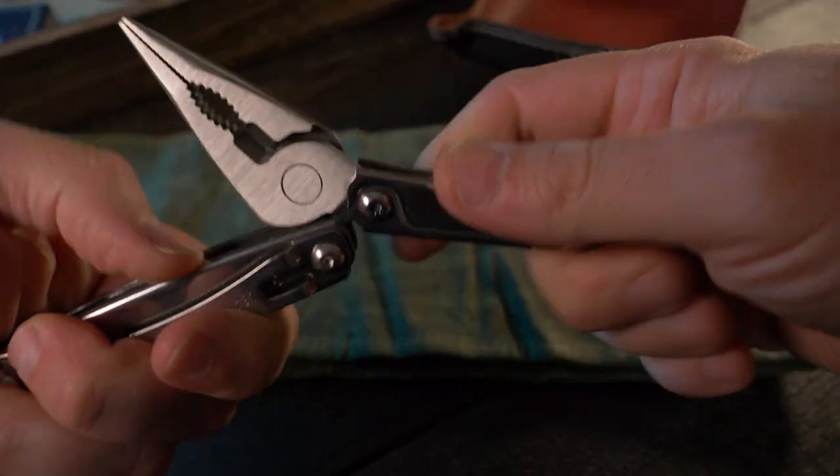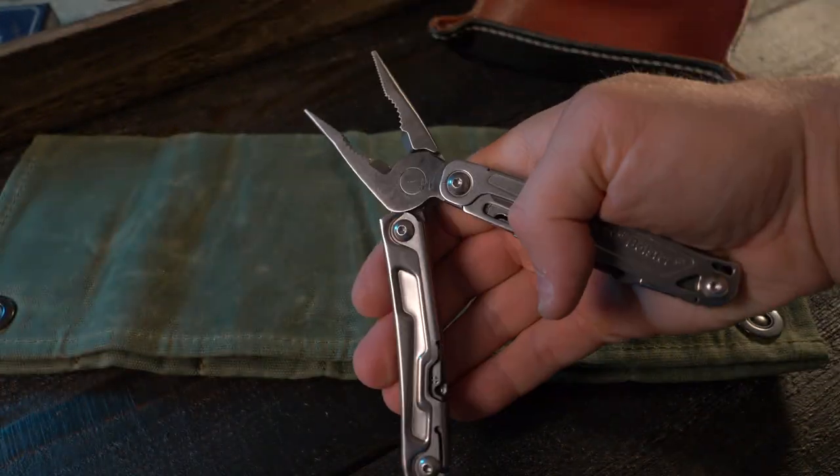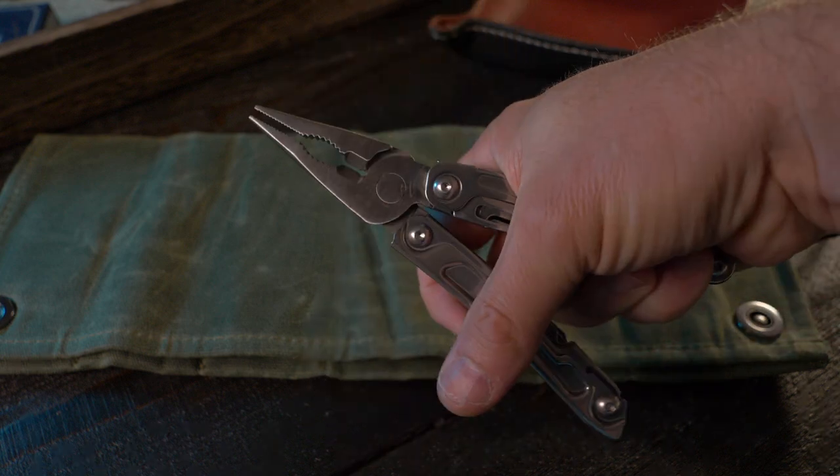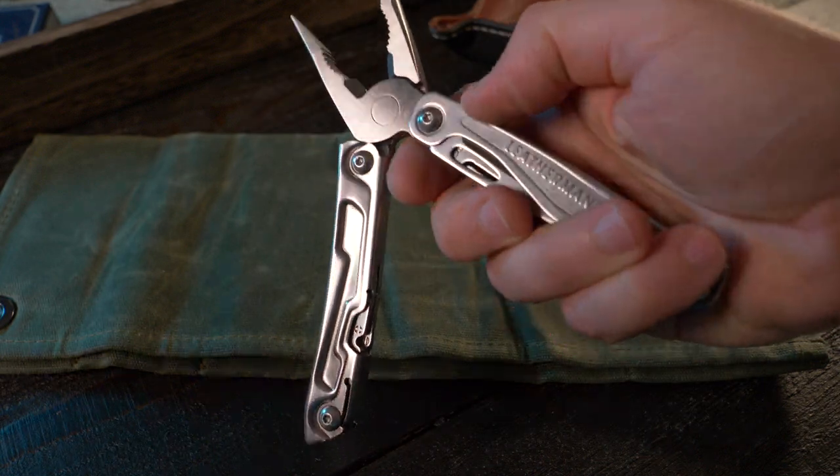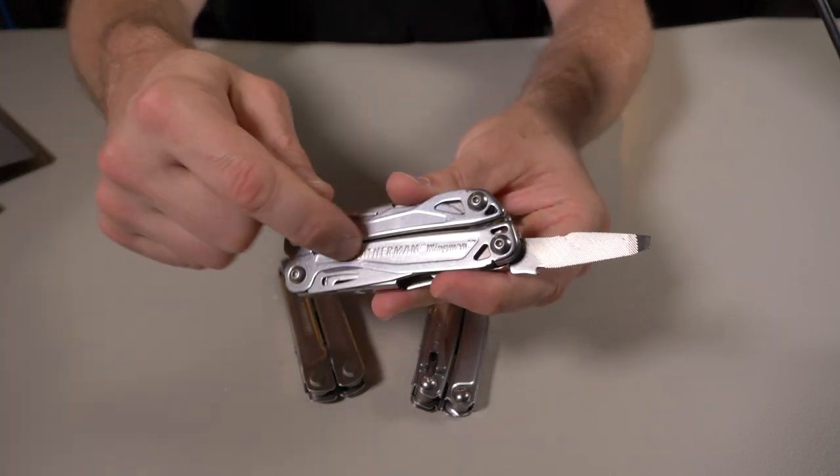Unfortunately I can't find my Leatherman Sidekick. I have no idea where that is. I moved recently and it just got lost in the mix. It's probably still in my basement in a box somewhere. I just can't find it. And I never really picked up a Rev only because I own the Wingman here.